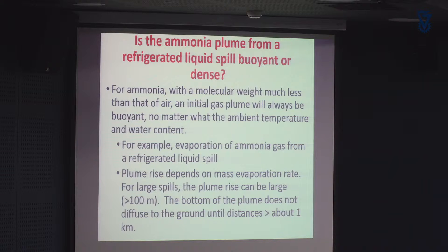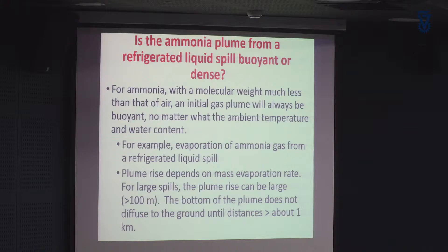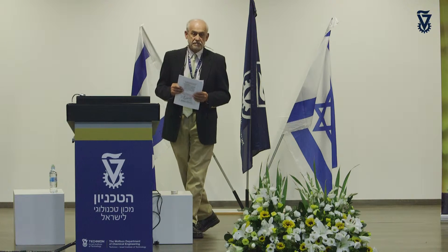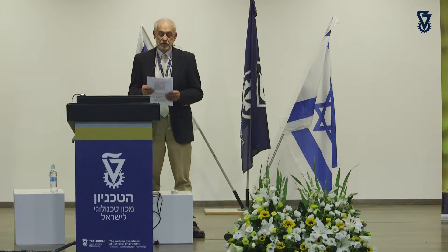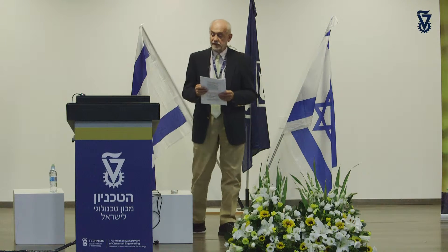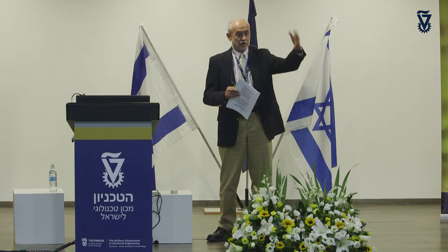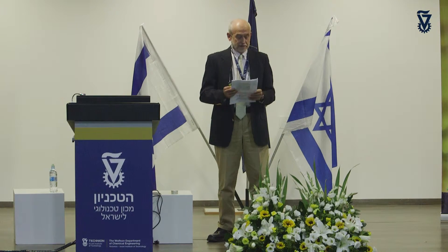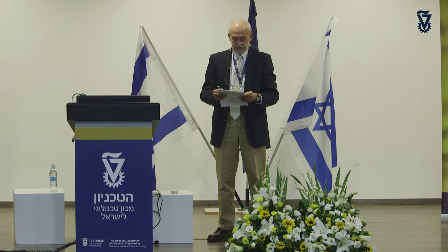So is a plume from a refrigerated liquid spill buoyant or dense? Ammonia has a molecular weight much less than that of air — about 40% less than air — and it will always be buoyant. You can do this calculation yourself no matter what the ambient temperature and ambient water content — those two things are not enough to counter the buoyancy. The plume rise depends on the mass rate evaporating into the air. For large spills it can be as much as 100 meters or more, and the bottom of the plume will be aloft and will not diffuse to the ground for a while.